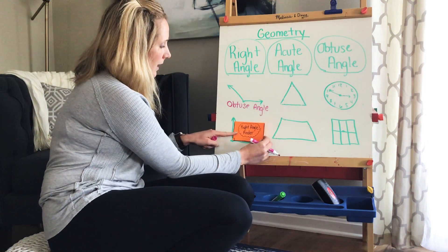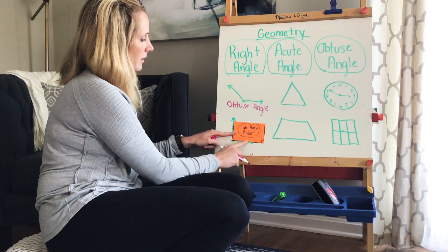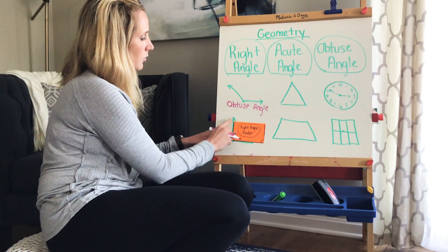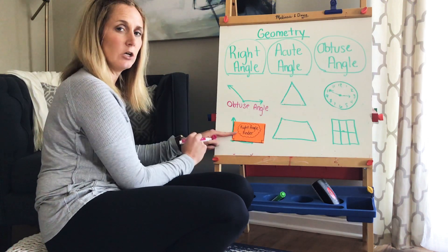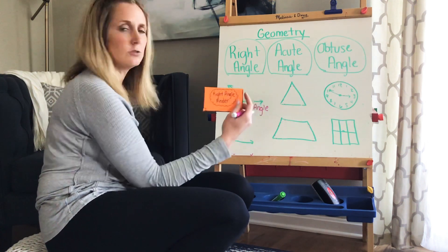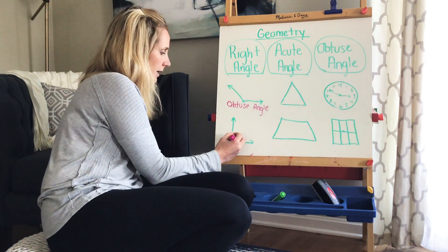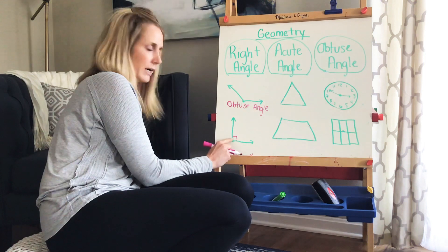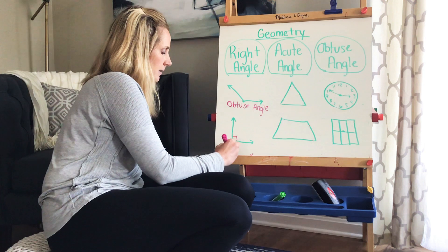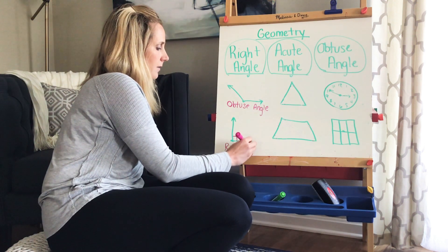Let's check this one. I get my handy-dandy right angle finder out, match up my bottom lines, and if you look, this is exactly on my vertical and horizontal line. So this must be a right angle. My right angle finder tells me it's a right angle, and I put that special square in there to show it's 90 degrees.